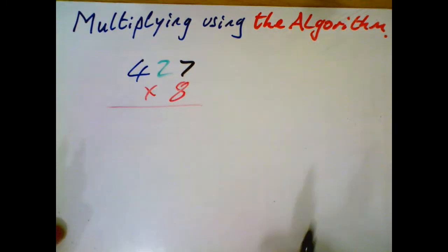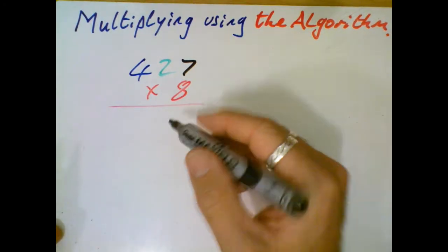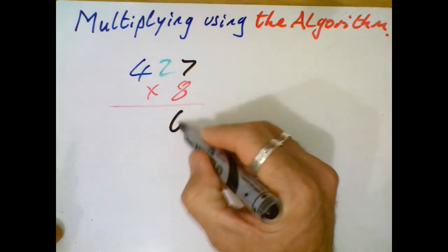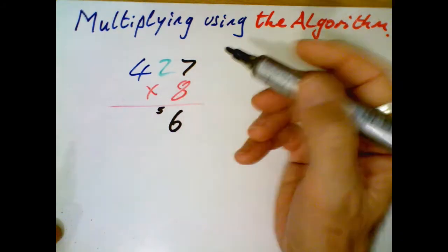7 times 8. 7 times 8 is 56. And it's that worst one, isn't it? It's the horrible one, 56. Okay, so I've got a 50 over here that I've got room to add on in a minute.